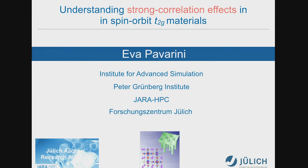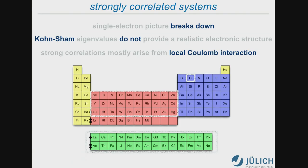I was thinking to devote two slides to introduce the topic of strong correlation. Eric already did that, but let me remind you of some main aspects. Strongly correlated systems are those for which the single electron picture breaks down qualitatively. Kohn-Sham eigenvalues do not provide a realistic electronic structure, and the strong correlation mostly arises from the local part of the Coulomb interaction.